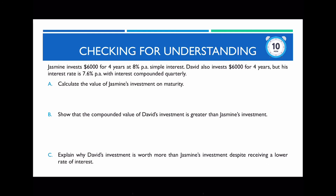For the practice questions: Jasmine earns simple interest and David earns compound interest. For part (a), to calculate the value of Jasmine's investment on maturity after four years, I use the simple interest formula: I = (P × r × t) / 100 = (6,000 × 8 × 4) / 100 = $1,920. This is the interest earned, so her total balance is $6,000 + $1,920 = $7,920.